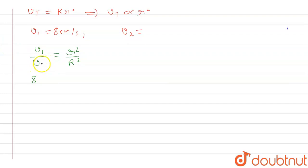So this is 8 by v2 equals small r squared over capital R squared. Capital R we have already calculated is equal to 2r, that means it's (2r) whole squared.